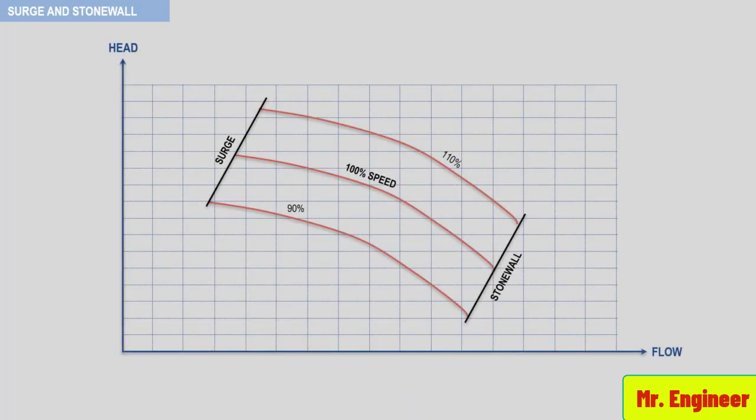Stonewall is defined as the maximum flow a given impeller can handle. This value will be obtained when the ratio of the relative inlet gas velocity to the sonic velocity of the process gas being handled is equal to 1. The name stonewall comes from the fact that the compressor curve suddenly drops off and appears to have come up against a stonewall. The cause of this phenomena is excessive relative gas velocity through the impeller.